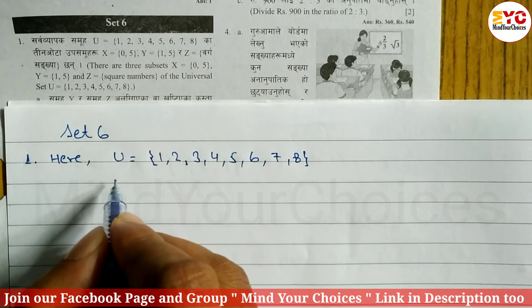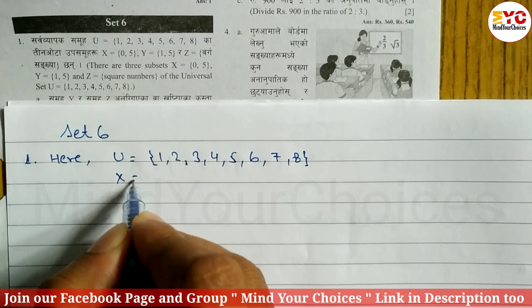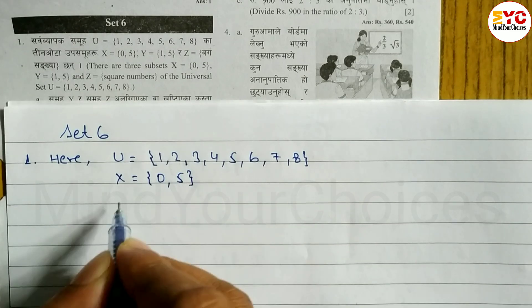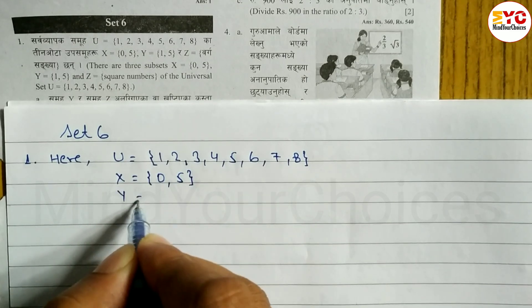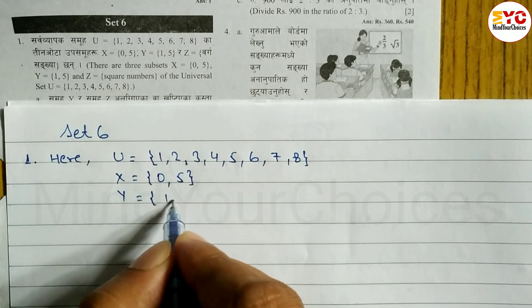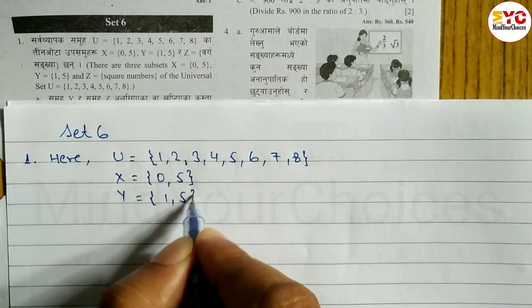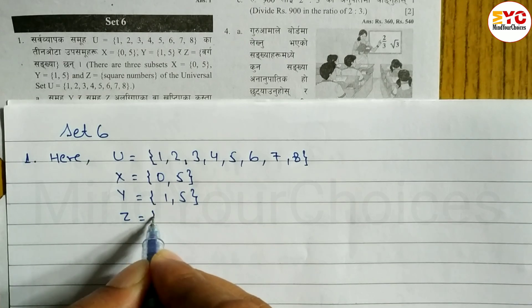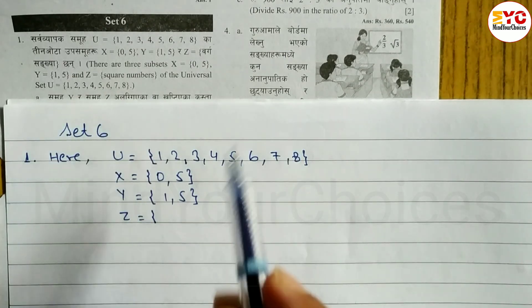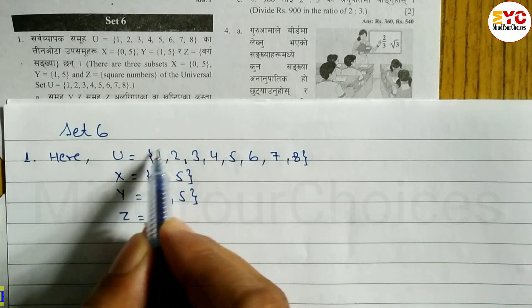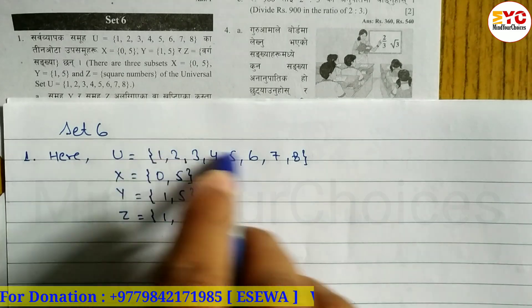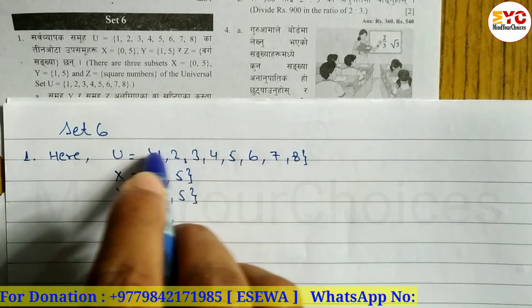X is equal to 05. Y is equal to 15. So write down here: 15, F1, 5. Z is equal to K2. Square number 1.